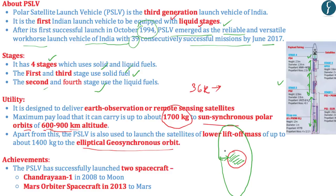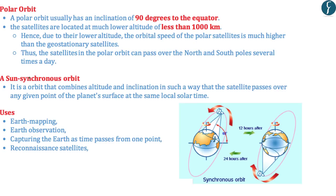Before GSLV was available, India utilized PSLV to launch a satellite into this elliptical orbit, and once the satellite reached the right point, the remaining motor was fired to extend the minor axis to the full geosynchronous orbit, making it a completely circular orbit. As far as achievements go, apart from launching all IRNSS satellites, PSLV has also launched Chandrayaan-1 to the moon and the Mars Orbiter Spacecraft in 2013 to Mars.